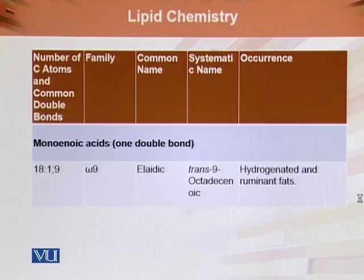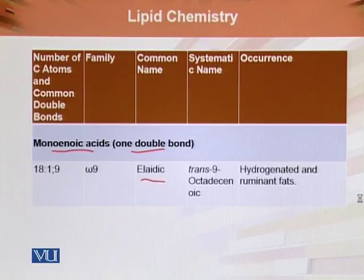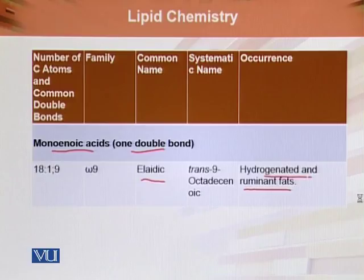Another monoenoic acid with one double bond is elaidic acid. It is found in hydrogenated and ruminant fats. This is again an omega-9 fatty acid, an 18-carbon compound with one double bond at the 9th position.